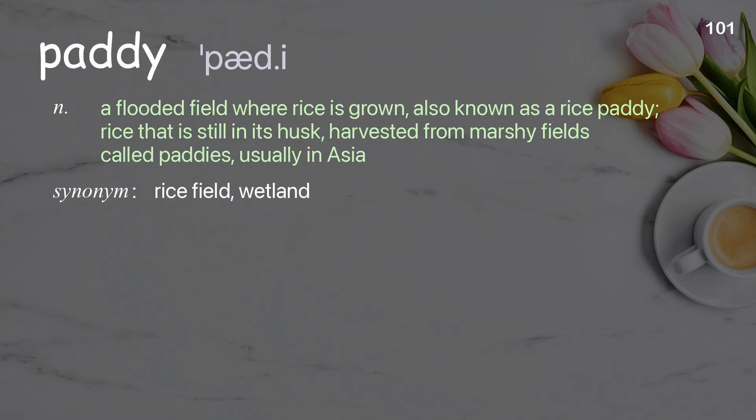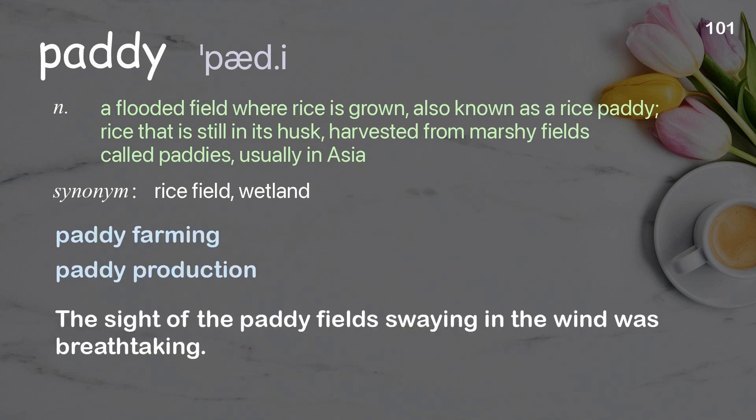Paddy: a flooded field where rice is grown, also known as a rice paddy; rice that is still in its husk, harvested from marshy fields called paddies, usually in Asia. Examples: paddy farming, paddy production. The sight of the paddy fields swaying in the wind was breathtaking.